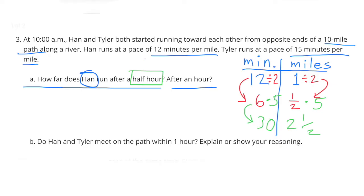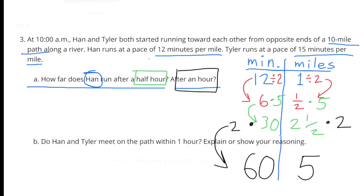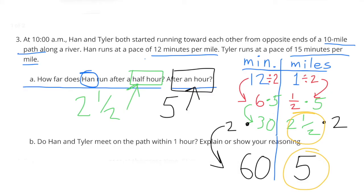If we multiply that 30 minutes by two we have 60 minutes, which is equal to one hour. So if we multiply two and a half times two, we have five miles. Han can run five miles in 60 minutes, or five miles in one hour. At that same pace, Han runs two and a half miles in 30 minutes, or two and a half miles in a half an hour.